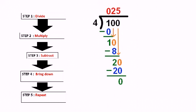Since 1 is less than 4, four goes 0 times into 1. We subtract: 1 minus 0 equals 1. Then bring down the next digit. The multiply step is already done.